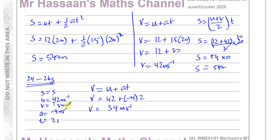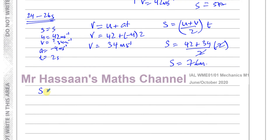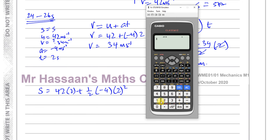Using s equals (u plus v) over 2 times t: s equals (42 plus 34) over 2 times 2. The 2s cancel, giving 42 plus 34 equals 76 metres. This can be verified with s equals ut plus one-half at squared: 42 times 2 plus one-half times negative 4 times 4, giving 84 minus 8 equals 76 metres. Both methods give the same answer.